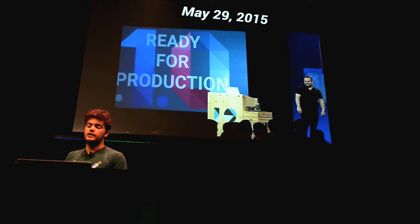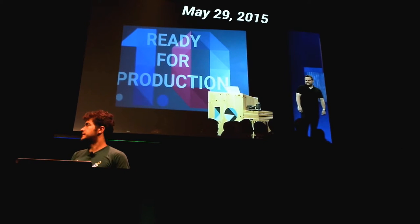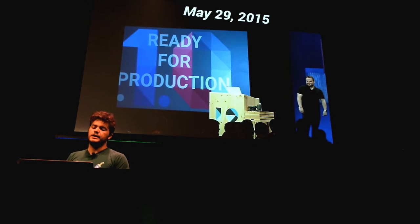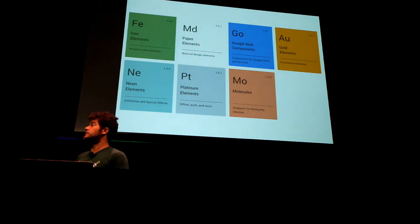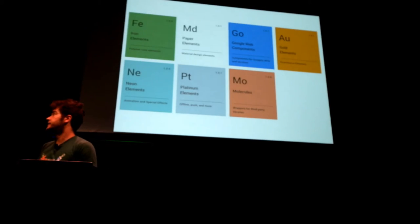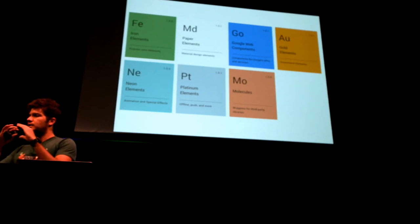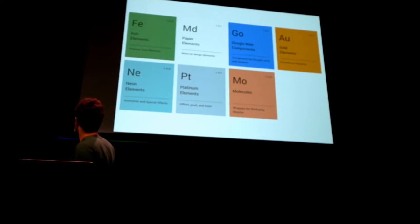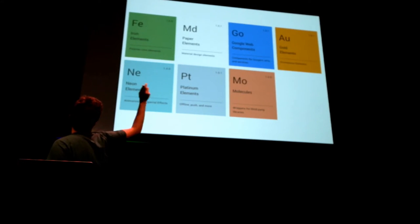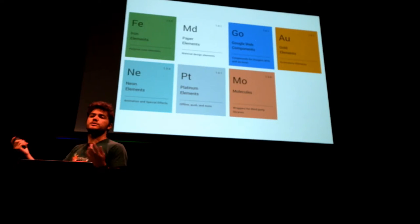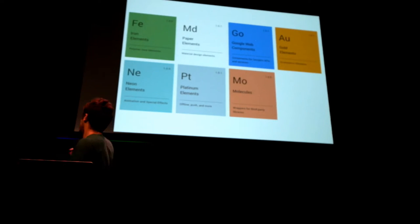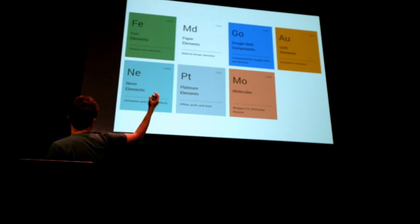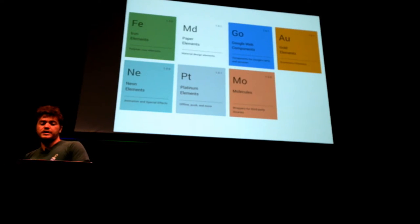About two months ago at the last I/O, they announced Polymer 1.0 — it's ready for production, now you can use it and be happy. They announced iron elements, paper elements, Google Web Components that you can connect to Google APIs with just one tag, Neon, Platinum — all those things.